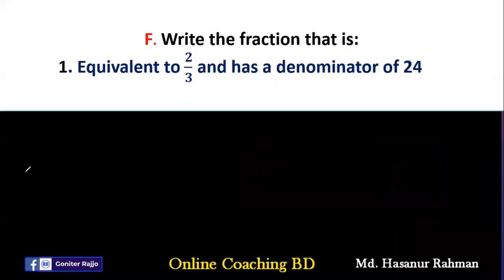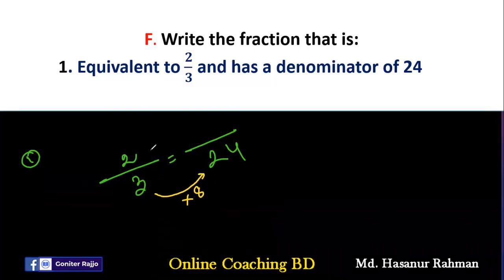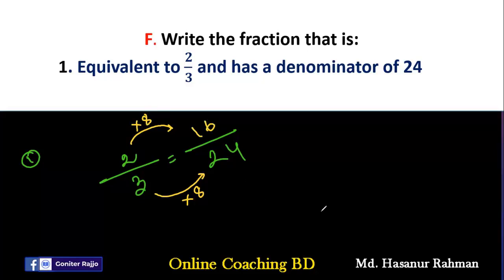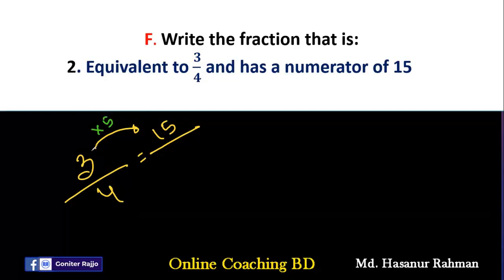Now Number F says: write the fraction. Number 1: equivalent to 2/3 and has a denominator of 24. We have to find the missing numerator. We think about the relation between 3 and 24: 3×8=24. So we multiply the numerator by 8 also: 2×8=16. Then 16/24 is the final fraction. Number 2: equivalent to 3/4 and has a numerator of 15. We convert 3 into 15 by multiplying by 5, so we multiply 4 by 5 also: 4×5=20. The answer is 15/20.